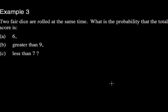In the last example, you have two fair dice, and you roll them at the same time. What's the probability that the total score is six? Well, we have to think about what we did in the previous video. So remember, we're looking for a total score of six.